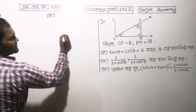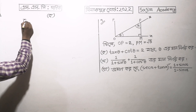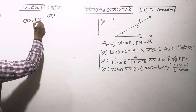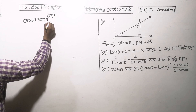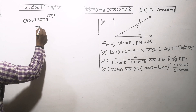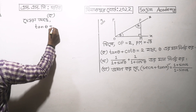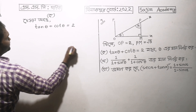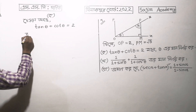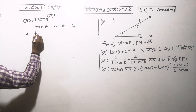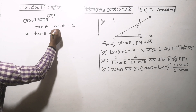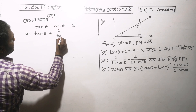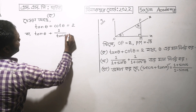The first question: 2 is 2, 10 theta plus 1 is 4 theta. The second question: 1 by 10 theta is 1 by 10 theta.